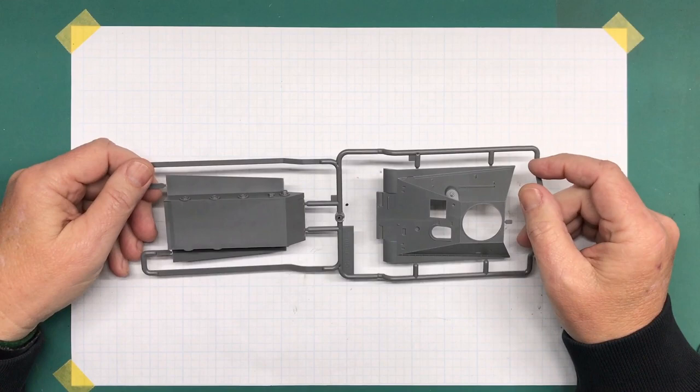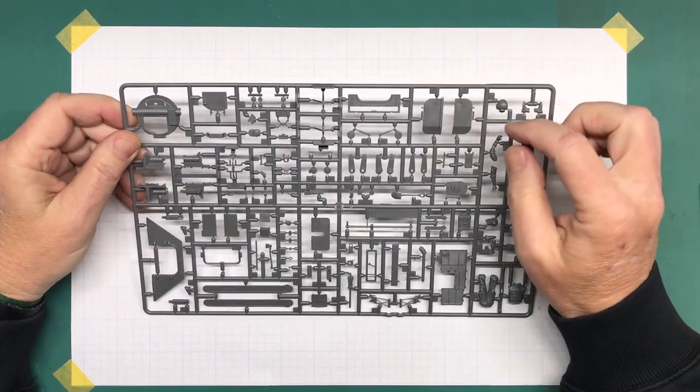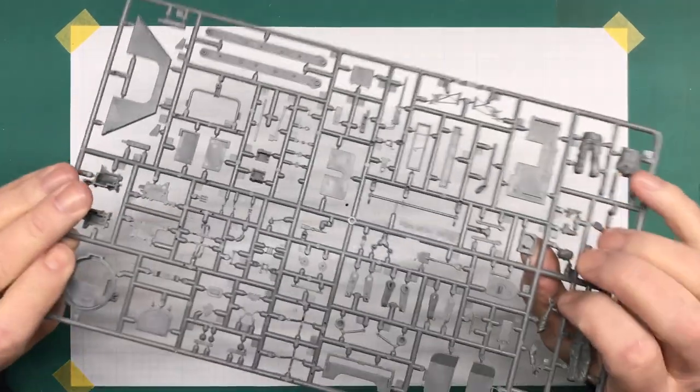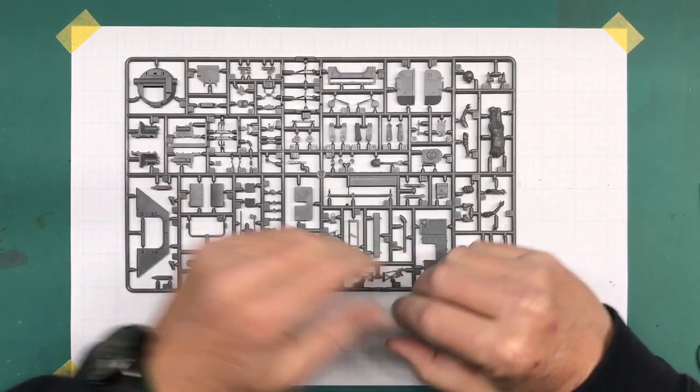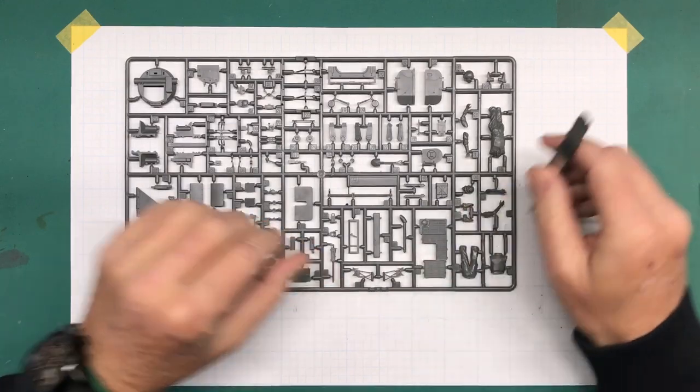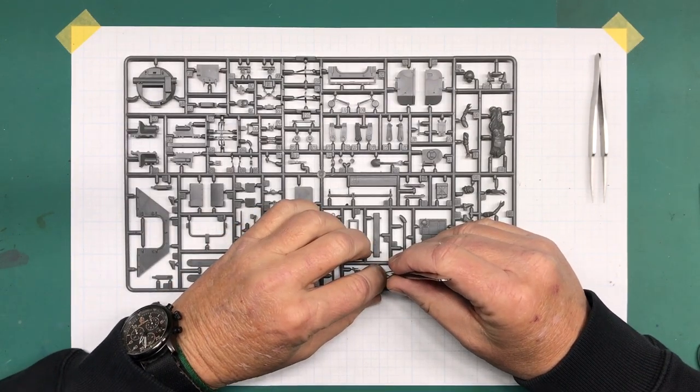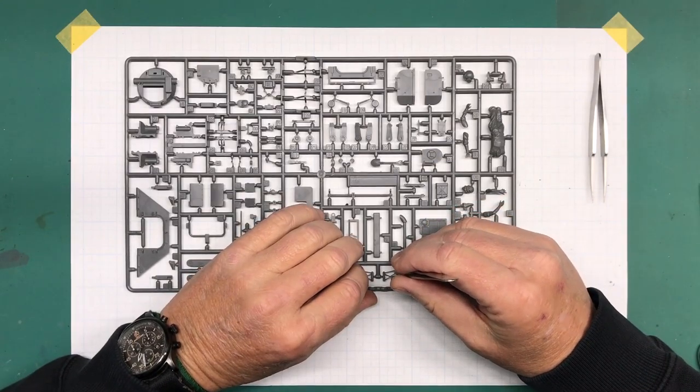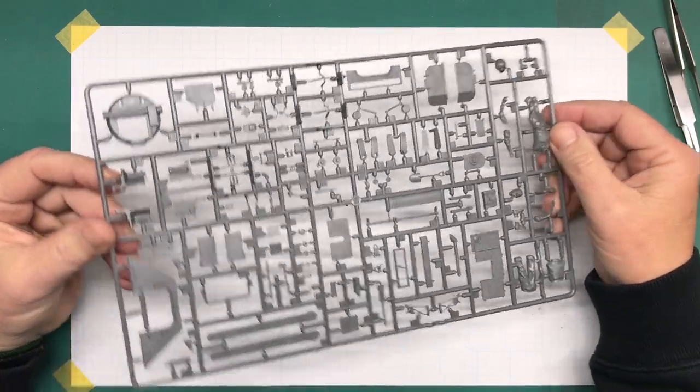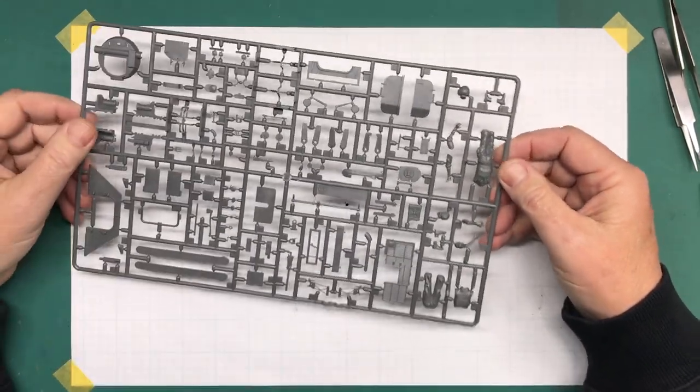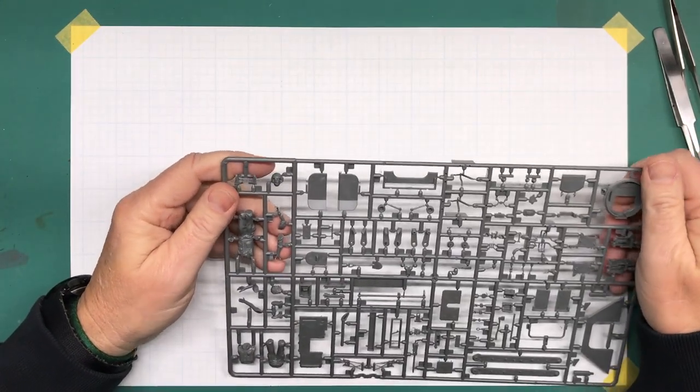Sprue B. Lots and lots of parts. We've got suspension components, hatches, fuel can, grills. Very fine detail. There's something that's broken there. It's pretty small but it should be easy to get glued back together. I'll do that once I cut it off. But very fine detail, no flash. Seam lines, mold seam lines, can't really see much. We got the figures down here.